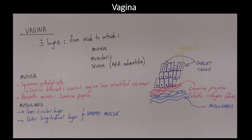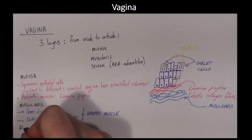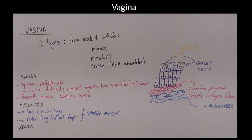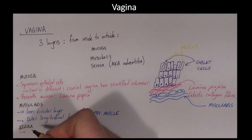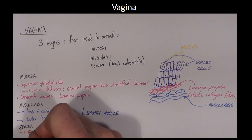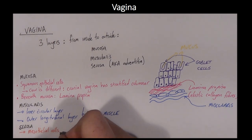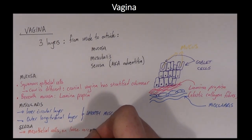The vaginal serosa, which is also known as the adventitia, consists of mesothelial cells on loose areolar connective tissue. It allows the vagina to move against other pelvic organs without adhering to them.